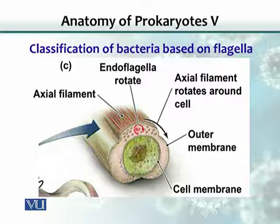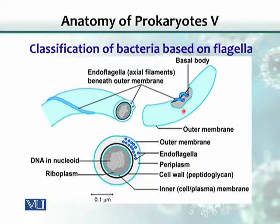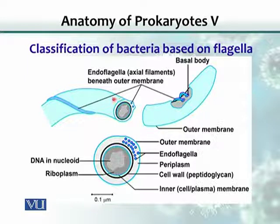When the axial filament rotates, the whole structure rotates, causing a corkscrew movement — this is different from the flagellum movement seen earlier. Each axial filament has a basal body, and the filament basically rotates around the cell all the way along the body of the bacterium.